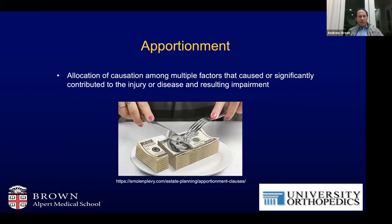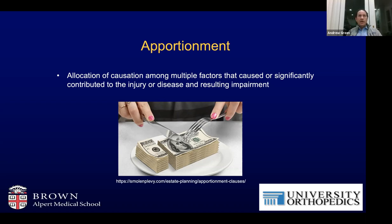Apportionment comes up occasionally — often with whether someone had a preexisting condition, or if someone changed jobs from one company to another and the current carrier says: isn't their rotator cuff problem because they did heavy lifting at their previous job? Or they have an underlying rotator cuff condition that was preexisting — what percentage of their current injury is related? This is really allocation of causation when there are multiple factors that caused or contributed to the injury, and usually comes down to who's going to pay and how much.